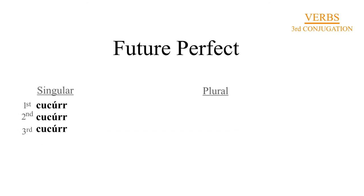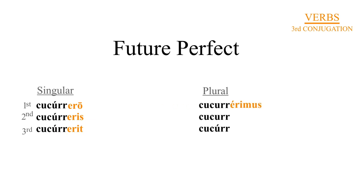And now we turn to the future perfect. First person singular, curēro. Second person singular, curērus. Third person singular, curērit. Third person plural, curērunt. First person plural, curēramus. Second person plural, curēritus. And third person plural, curērunt.